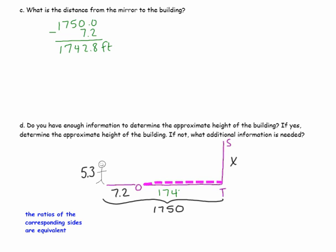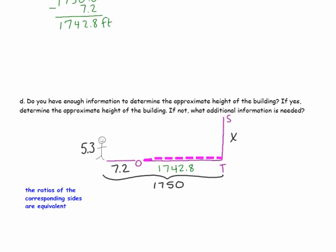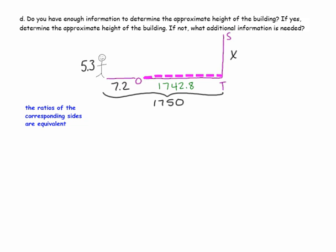Question C: What is the distance from the mirror to the building? That is not given to us, but we have enough information to figure it out. 7.2 plus a number equals 1,750, so we subtract 7.2 from 1,750, giving us 1,742.8 feet. Go ahead and label that. We have 4 parts and 3 of them are known, so yes, we have enough information.